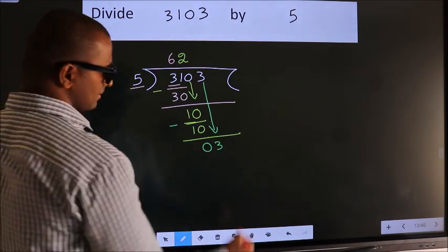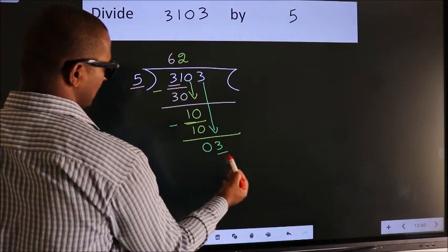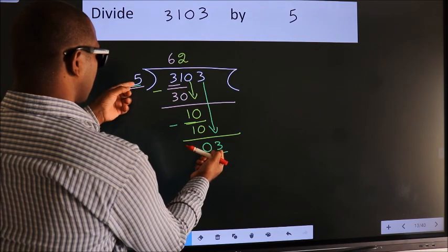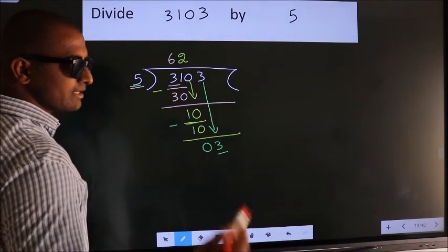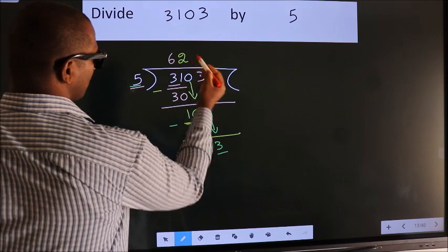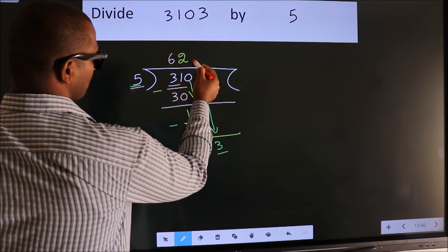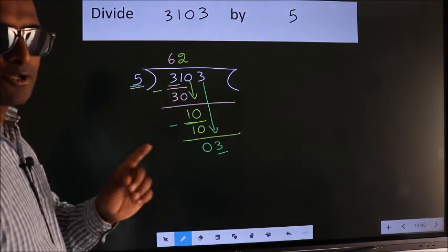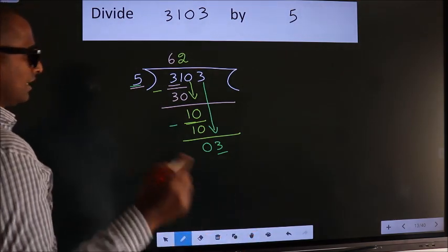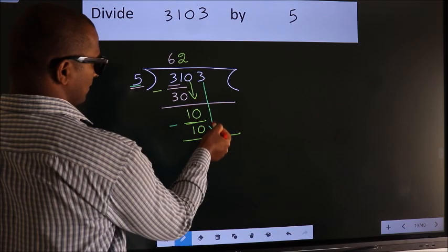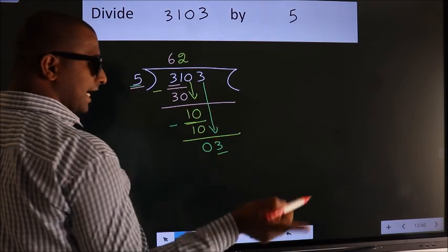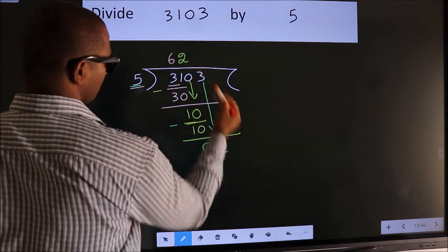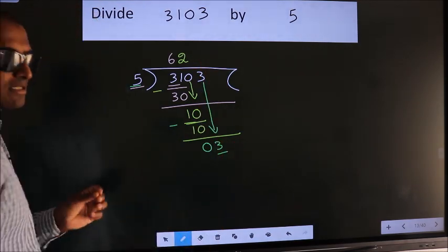And the mistake is this: here we have 3, here 5. 3 is smaller than 5. So what many do is they directly put dot and take 0, which is wrong. Why is it wrong? Because just now you brought this number down, and in the same step you want to put dot and take 0, which is wrong.